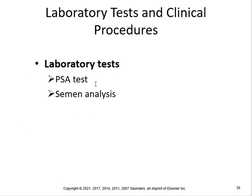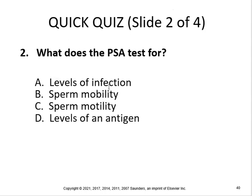A PSA test checks for prostate-specific antigen in the blood. Elevated PSA levels can indicate enlargement of the prostate gland and may be a sign of prostate cancer. A semen analysis can also be performed to assess sperm production.